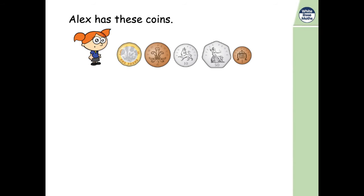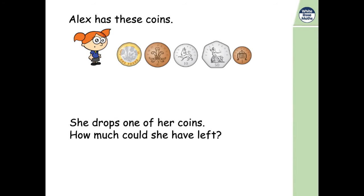What about Alex? So separate them into the pounds and the pence and then add them together. She drops one of her coins. How much could she have left? It doesn't tell you which coin she drops. So there's going to be more than one option for this. Pause, have a go and come back.